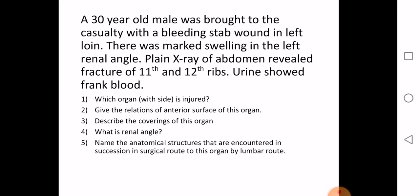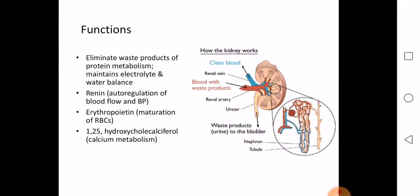By the end of this class, you must be able to answer these questions. What is the function of the kidney? The kidney is responsible for eliminating waste products in our body, particularly those related to protein metabolism. In addition, it is responsible for maintaining the electrolyte and water balance. The kidney also acts as an endocrine organ in that it produces hormones. The hormones produced by the kidney are renin, erythropoietin, and 1,25-hydroxycholecalciferol.